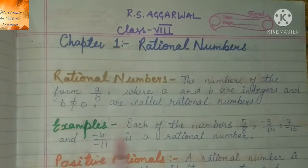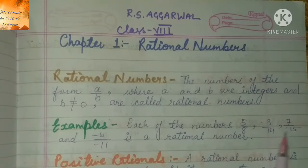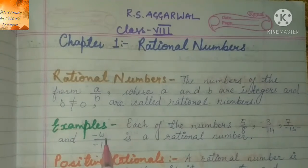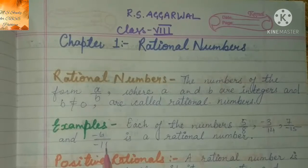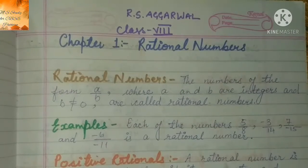Example में हम देख लेते हैं. Each of the numbers 5 by 8, minus 3 by 14, 7 by minus 15, and minus 6 upon minus 11 is a rational number.